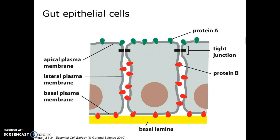We have proteins on the apical side of gut epithelia whose job is to move sugar from the gut lumen into the cell. This is active transport, so it requires ATP and energy to move the sugar into the cell.